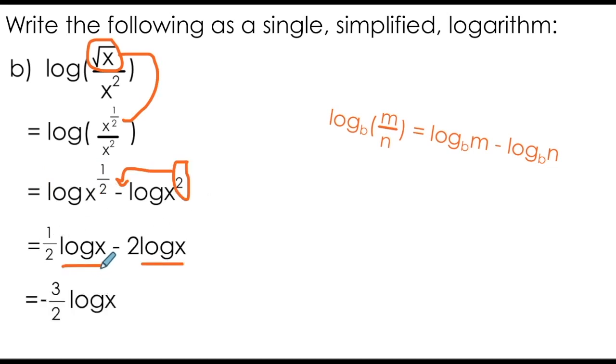I now have a situation where I can really just collect like terms. I have half of a log of x minus 2 log x, resulting in negative 3 over 2 log x. Now, if you're keen, you probably see that I could have produced this solution from the second step by just subtracting my exponents and bringing that exponent down in front of the logarithm. But again, I wanted to show you how you can use this law in practice.